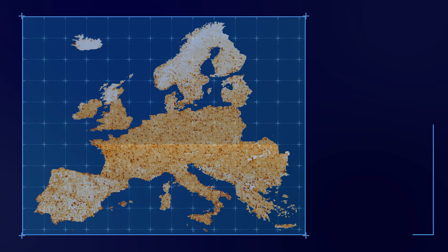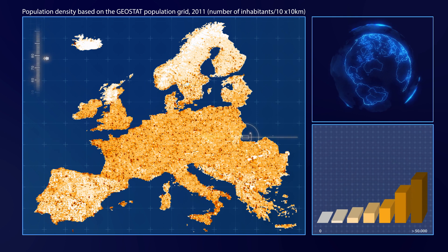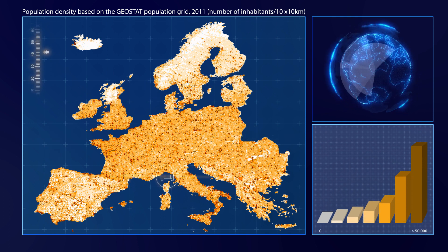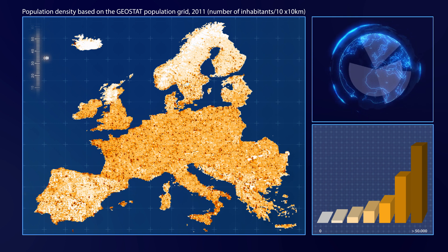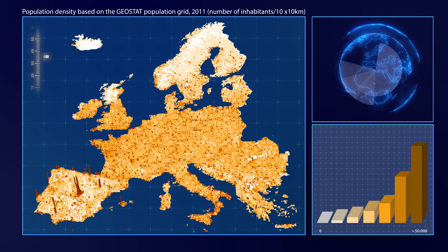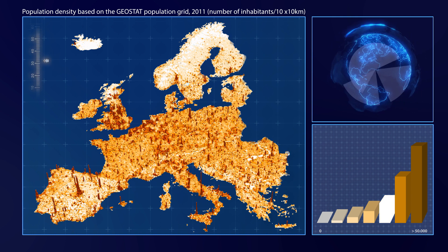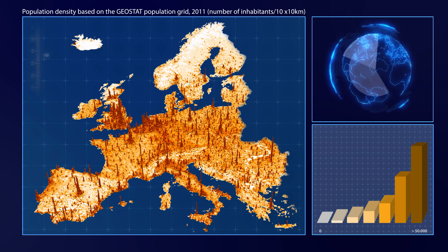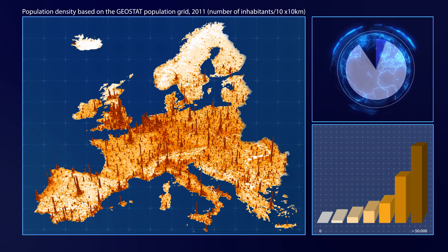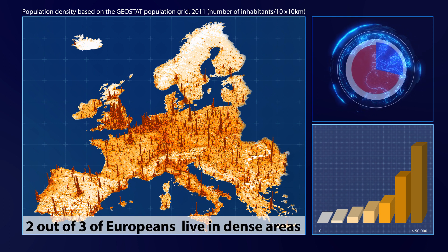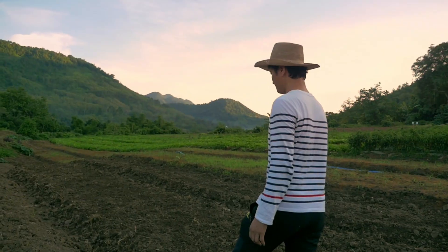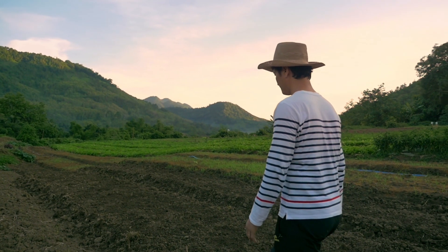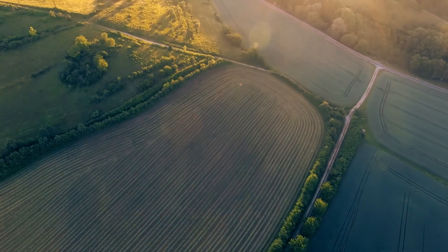If we look at the average population density in the EU, it is close to 100 inhabitants per square kilometer. However, if we take a closer look at the population density using the Geostat population grid, we can see that very few people — 3% of the EU population — live in areas that are close to this average. On the other hand, two out of three Europeans live in dense areas with more than a thousand inhabitants per square kilometer, which is at least ten times the EU average. Looking at EU averages only hides the reality most people experience in their own environment. This is why we need regional, city and small area statistics.